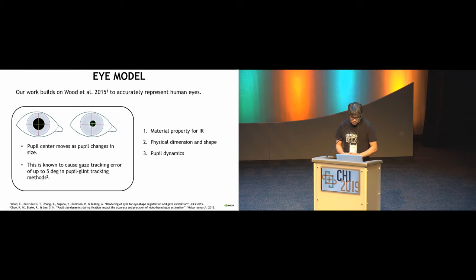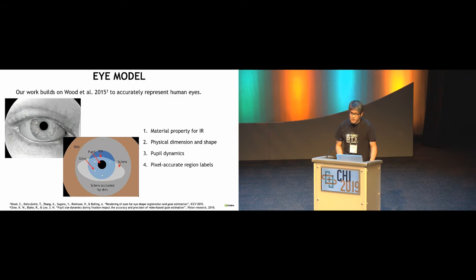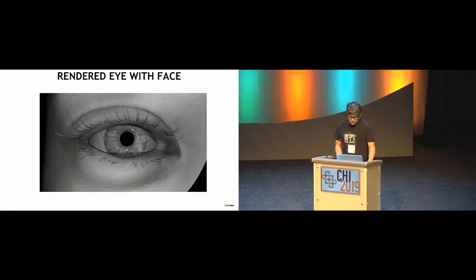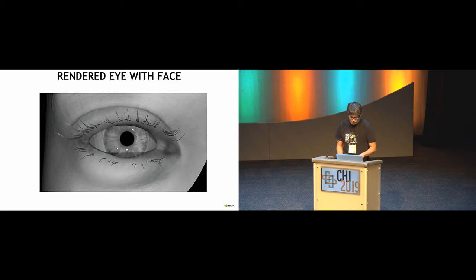The third change was the animation that performs pupil center shift as pupil size changes. As the pupil shrinks, it moves toward the nose and upward, and we parameterized that motion so you can modify it to include individual variations. The last thing was pixel-accurate region labels — we also provide region labels for areas occluded by skin. You can change gaze direction, and the glint shape and location are correctly calculated based on physics, and you can change the intensity of each region independently.